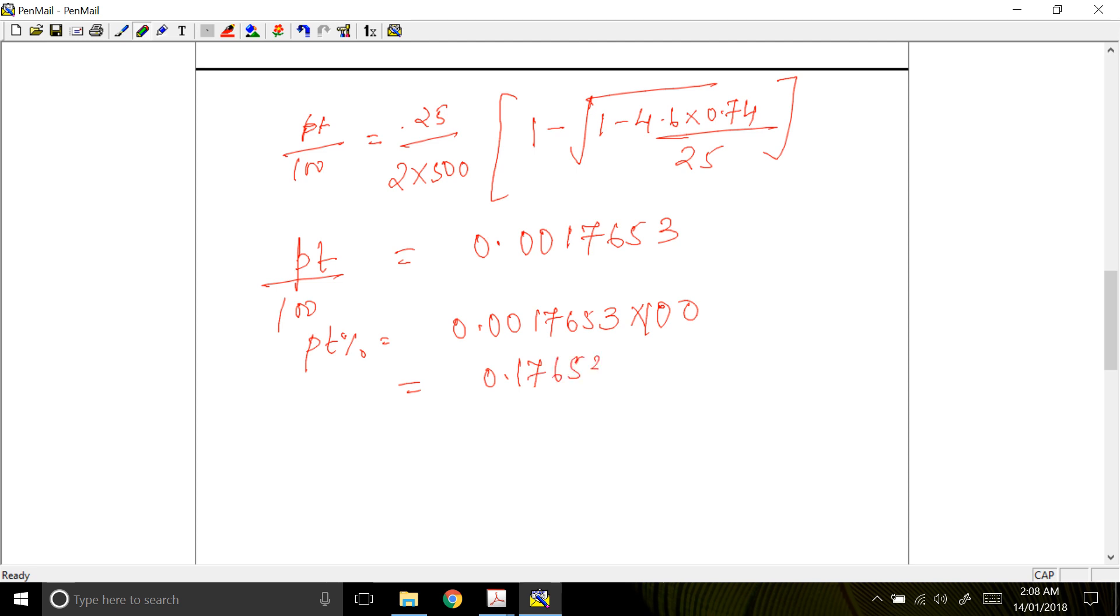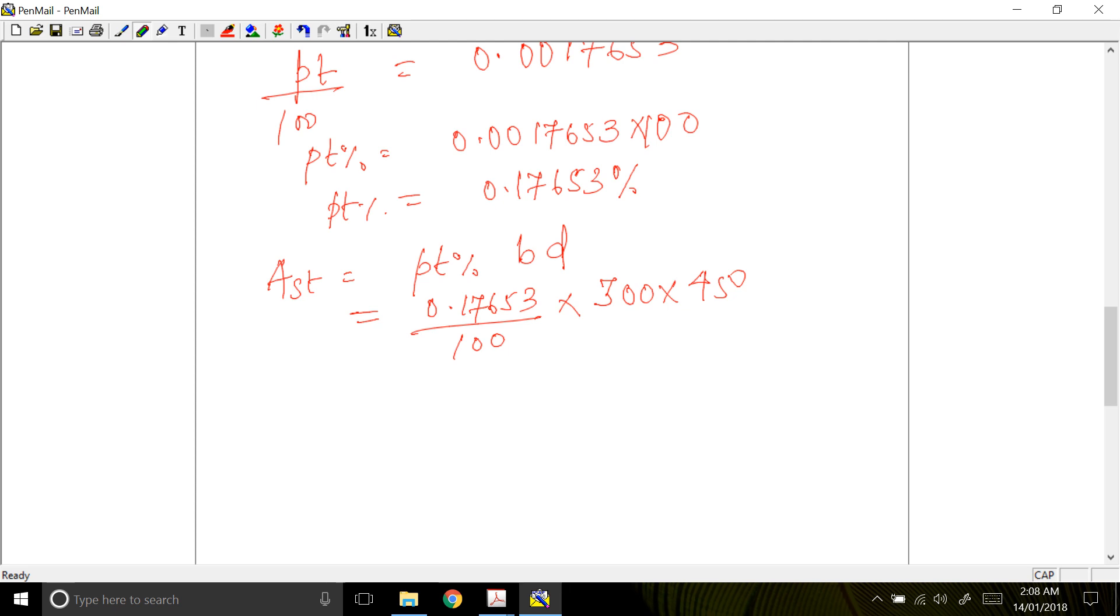Now your area of steel AST is equal to Pt, that is percentage steel, into B and D. So Pt is 0.17653 divided by 100 into your B is 300 and D is 450, which is equal to 238.3 mm square. So your AST is this much.